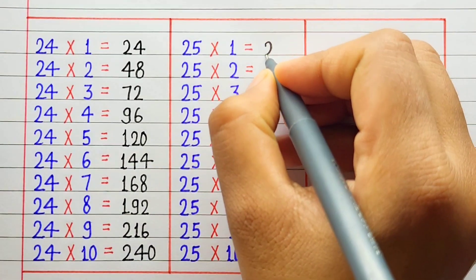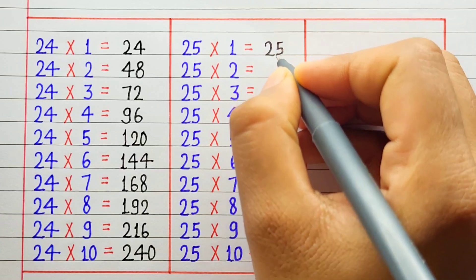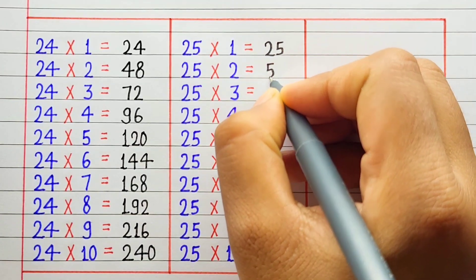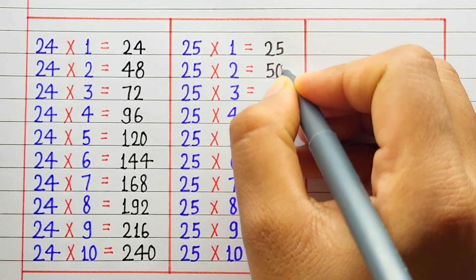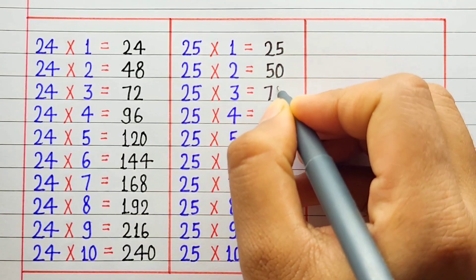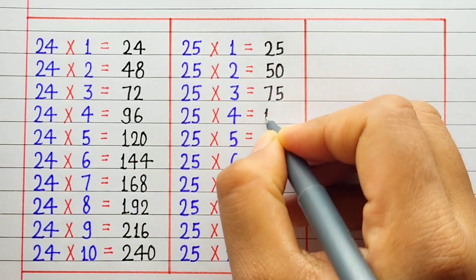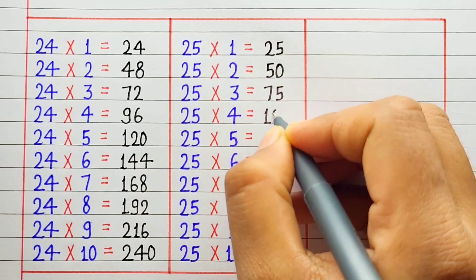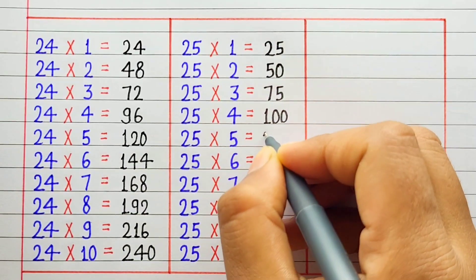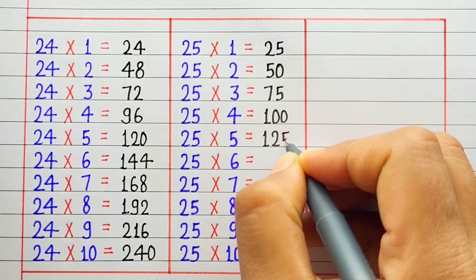25 1 ja 25. 25 2 ja 50. 25 3 ja 75. 25 4 ja 100. 25 5 ja 125.